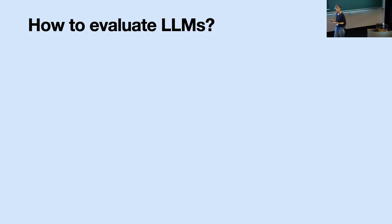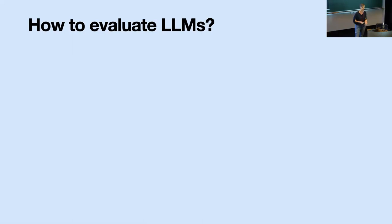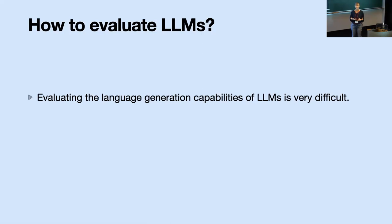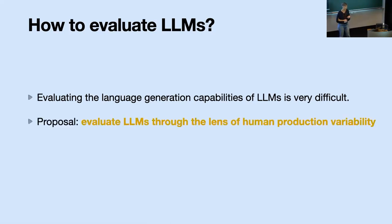A very key problem within the NLP community is how we should evaluate these large language models. It's actually very difficult to evaluate the generation of language — natural language generation. The field of NLP has been very concerned with evaluation because it is really very difficult to evaluate how fitting a certain generated text is, since there are so many dimensions to consider: is it fitting the context, is it fluent, is it appropriate in terms of style? A proposal I want to make is to try to evaluate large language models through the lens of human production variability.